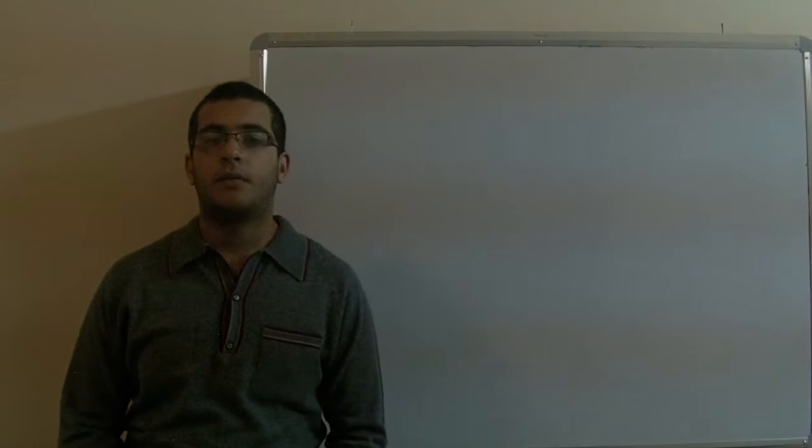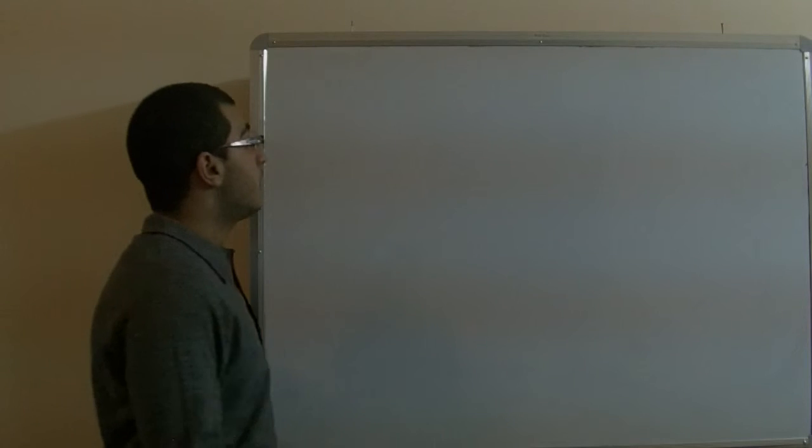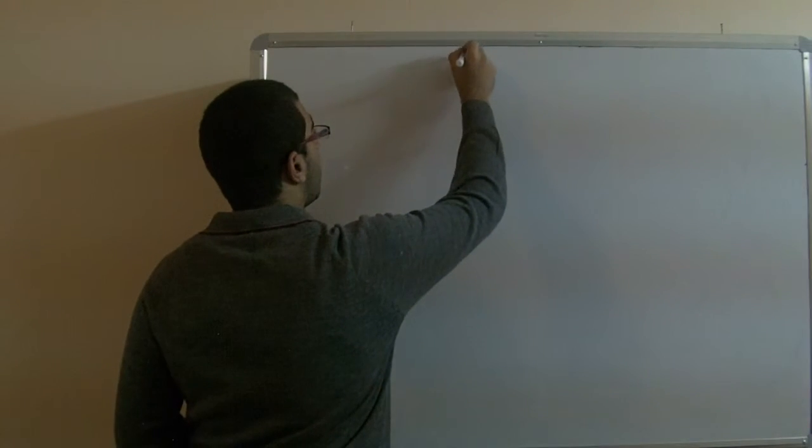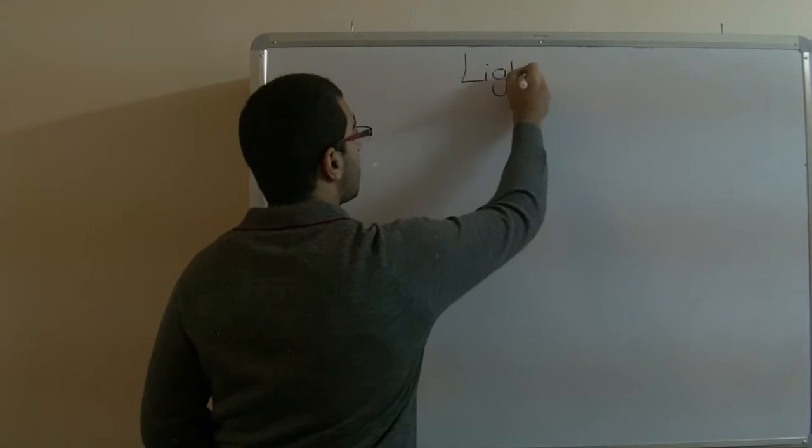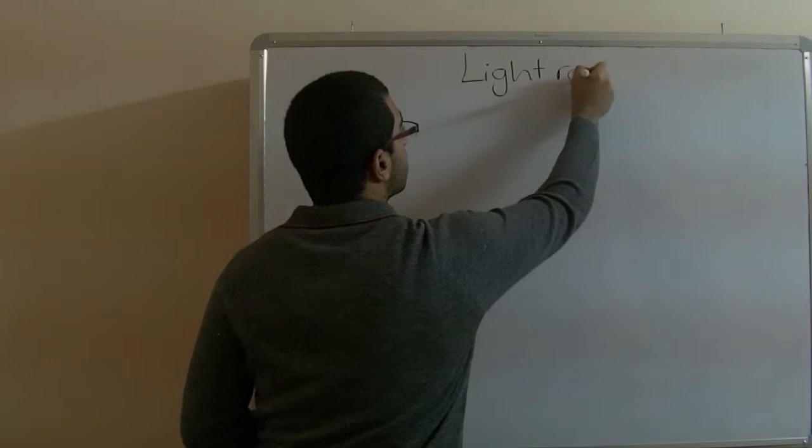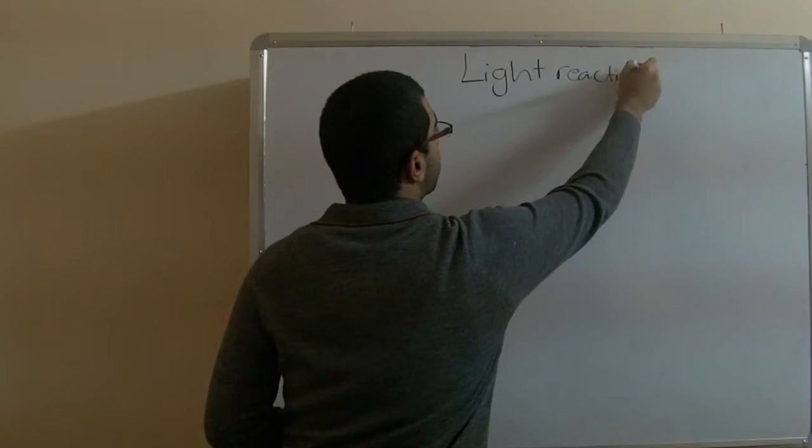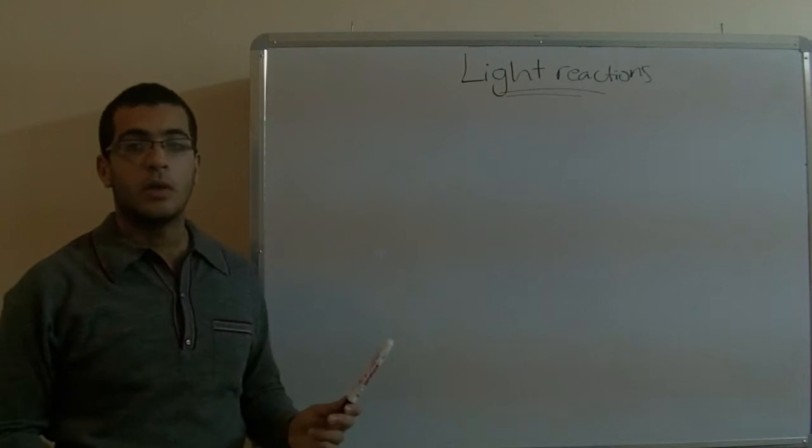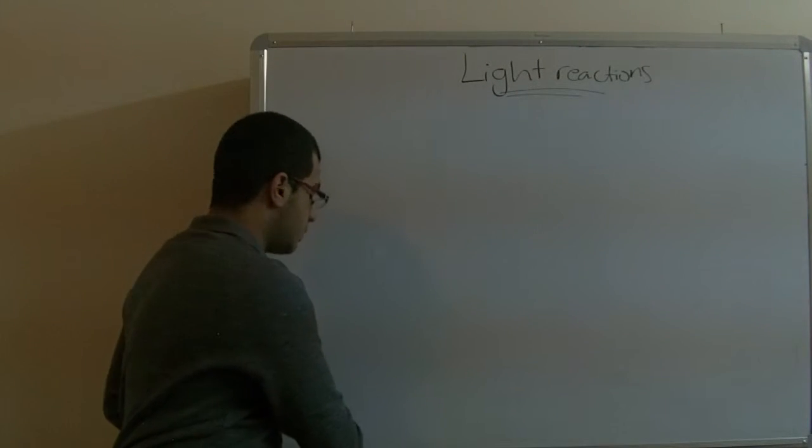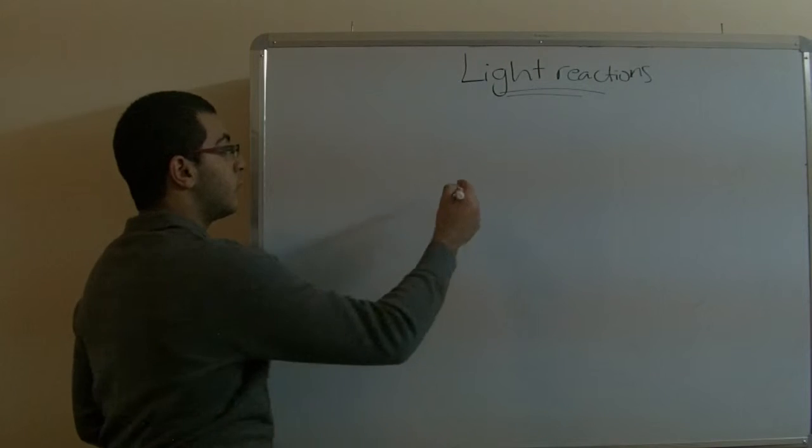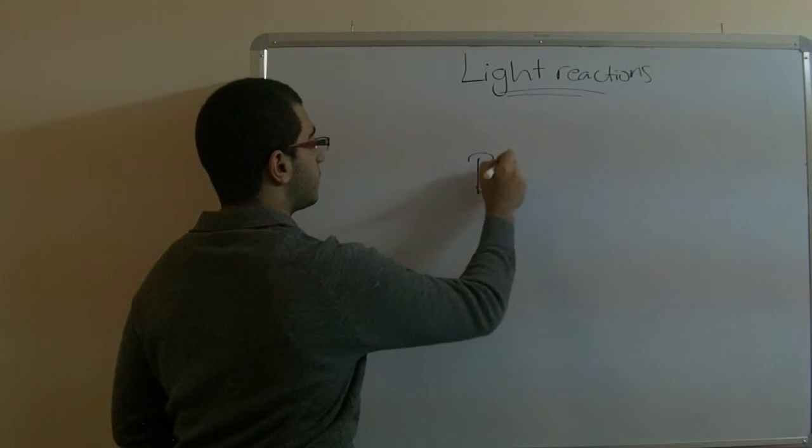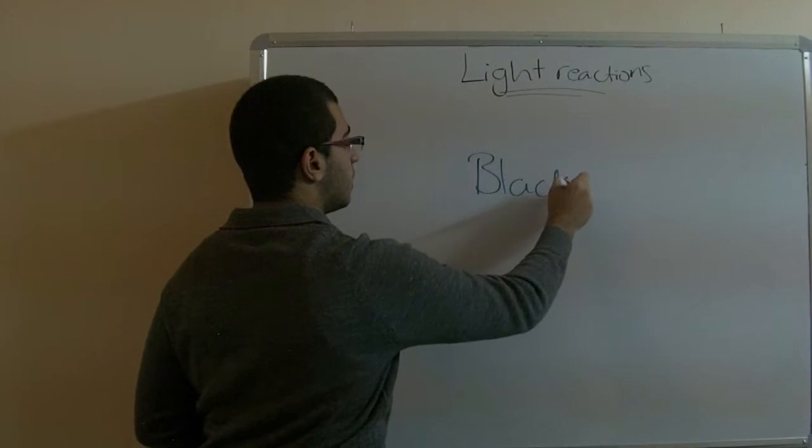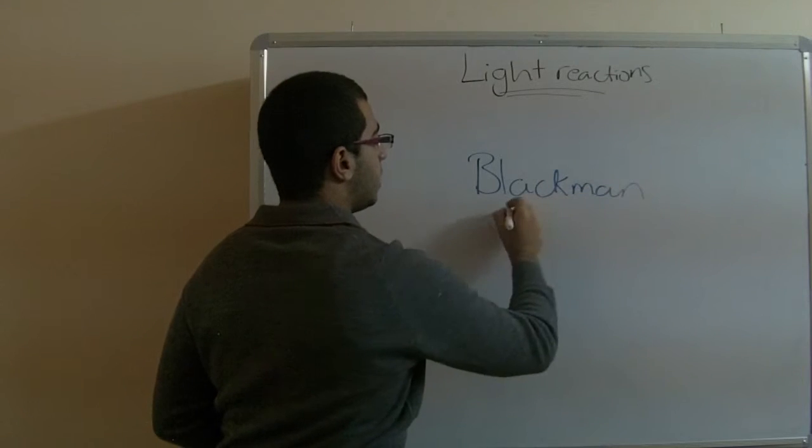Hello everybody, we are still in our first chapter of biology. Today we will talk about the light reactions. Before talking about this, we will first know that a scientist called Blackman carried on experiments to show the limiting factors of photosynthesis.